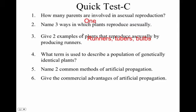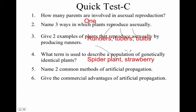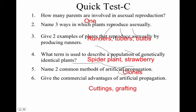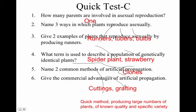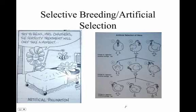How many parents are involved in asexual reproduction? One. Give three ways plants produce asexually: runners, tubers, bulbs. Give two examples of plants produced by runners: spider plant and strawberry plant. Which term describes a population of genetically identical plants? They're clones. Name two methods of artificial propagation: cuttings and grafting. Advantages: it's quick and produces large numbers.